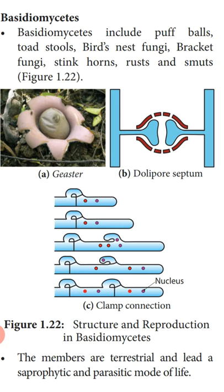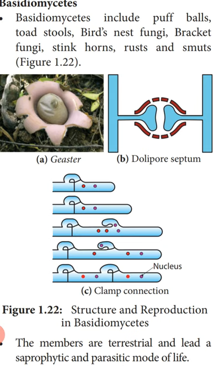Basidiomycetes include fungi like puffballs, toadstools, bird's nest fungi, bracket fungi, stink horns, rust, and smuts. Their first general characteristic is that the members are terrestrial — found only on land — and they lead a saprophytic and parasitic mode of life. Fungi are heterotrophic; they cannot prepare their own food. They obtain food either from dead and decaying matter (saprophytic) or from living organisms (parasitic).